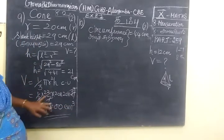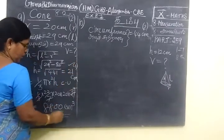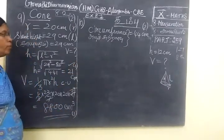8800 centimeter cube. This will come under 2 mark. If you want to cancel, 1 mark. Then for the final answer, 1 mark.